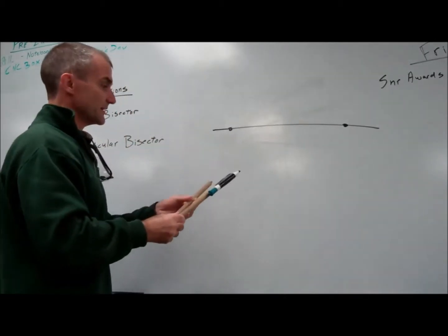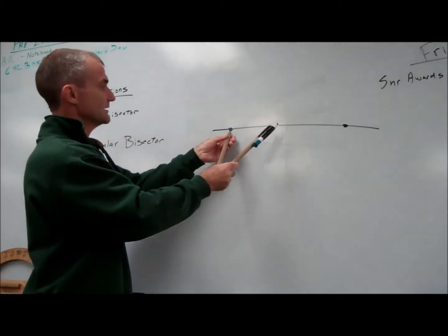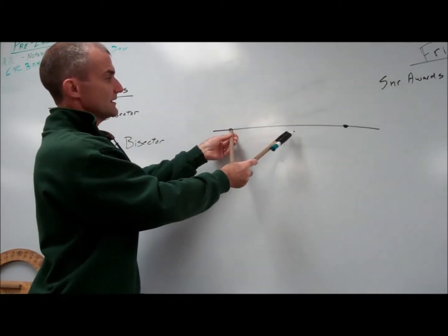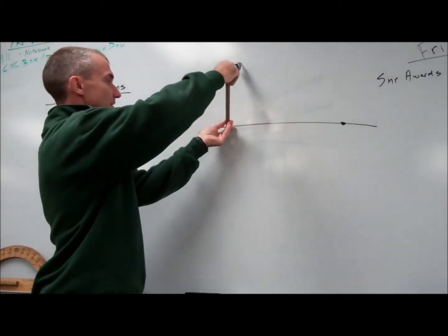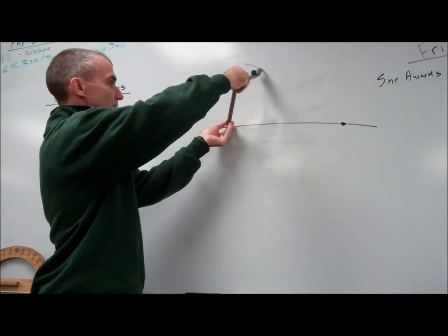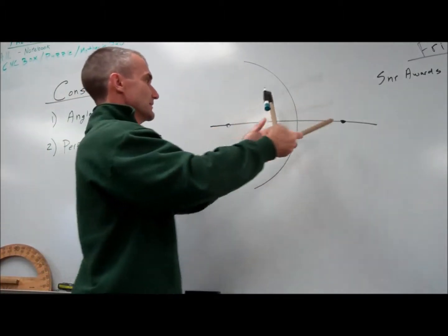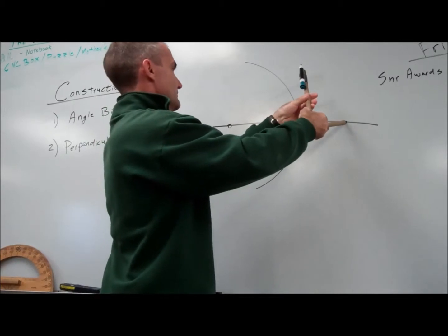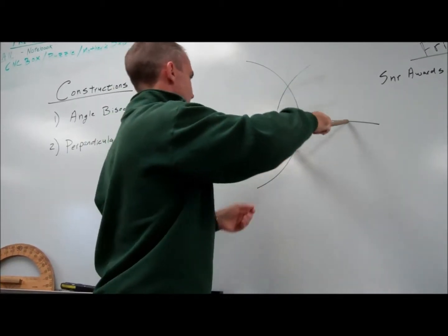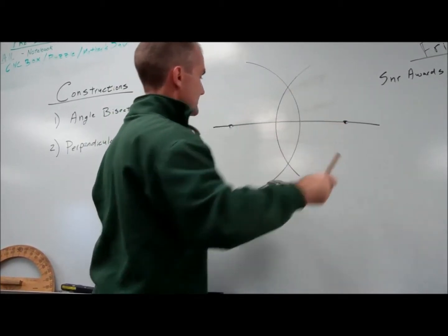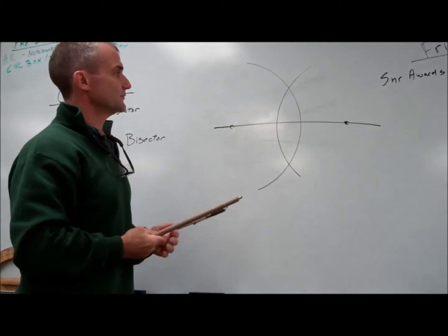Again, I use my compass. I have to set it on a setting greater than half the distance, and then I need to keep it there. So I create an arc from this point. These are all points equidistant from two given points.